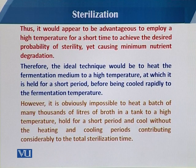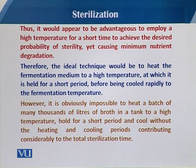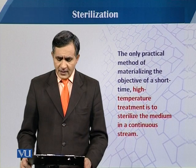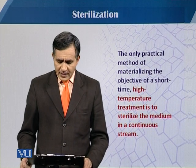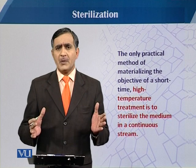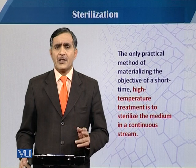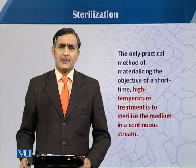However, it is practically impossible to heat a batch of many thousands of liters in a tank to a high temperature for a short time, and then quickly cool it down to avoid heat effects — on larger volumes in deep fermentation this is not feasible, which considerably prolongs the sterilization time. Therefore, the only practical method for achieving short-time high-temperature treatment is to sterilize the medium in a continuous stream rather than in a batch, since continuous flow allows high temperature to be applied for a short time rather than storing a single large volume.